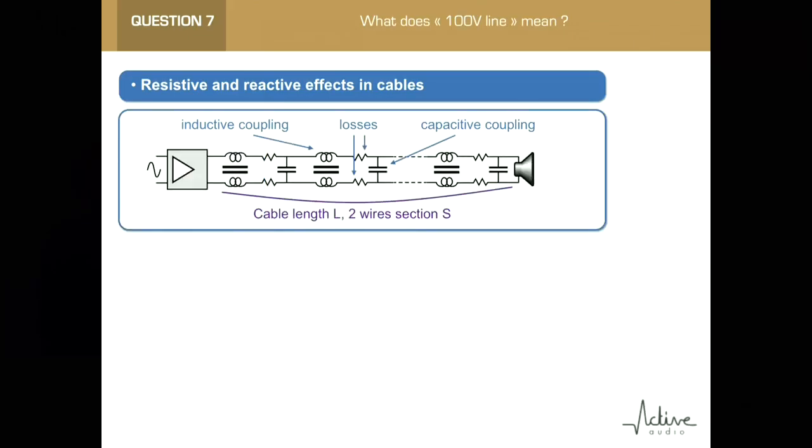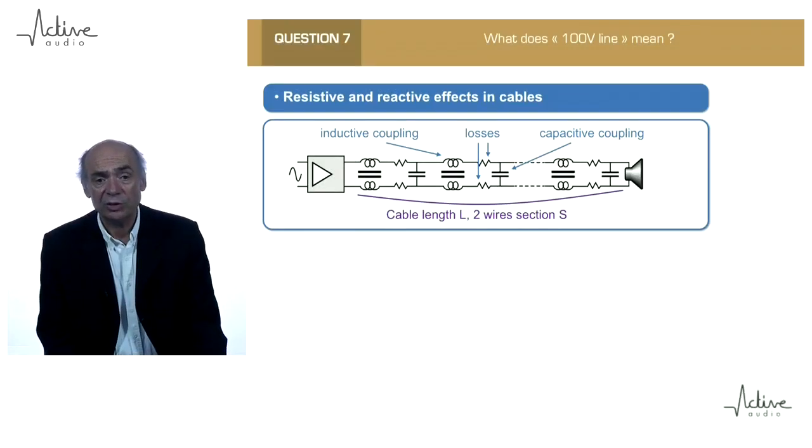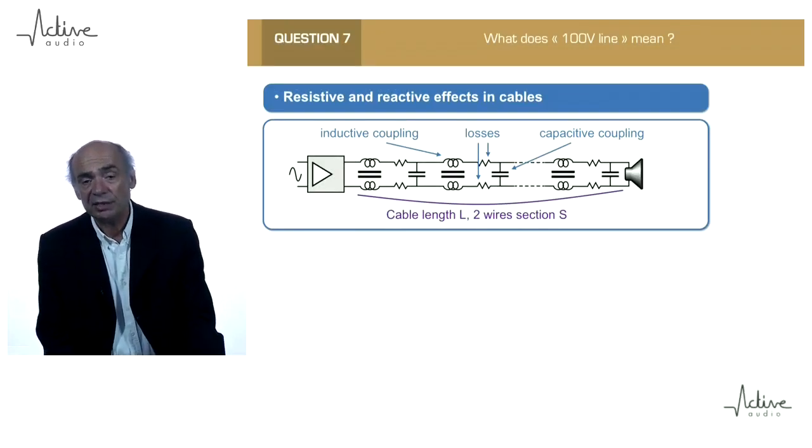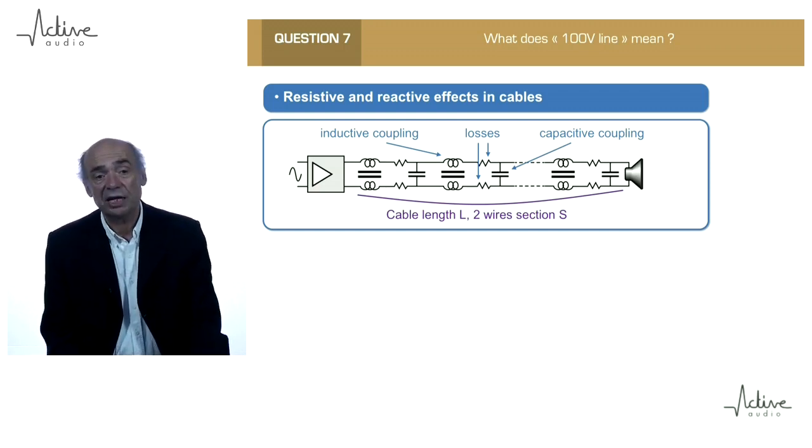A cable can be modeled with inductive coupling, transformers, with capacitive coupling, capacitors, and losses resistors. And these cables have on one side the amplifier, on the other side the loudspeaker.